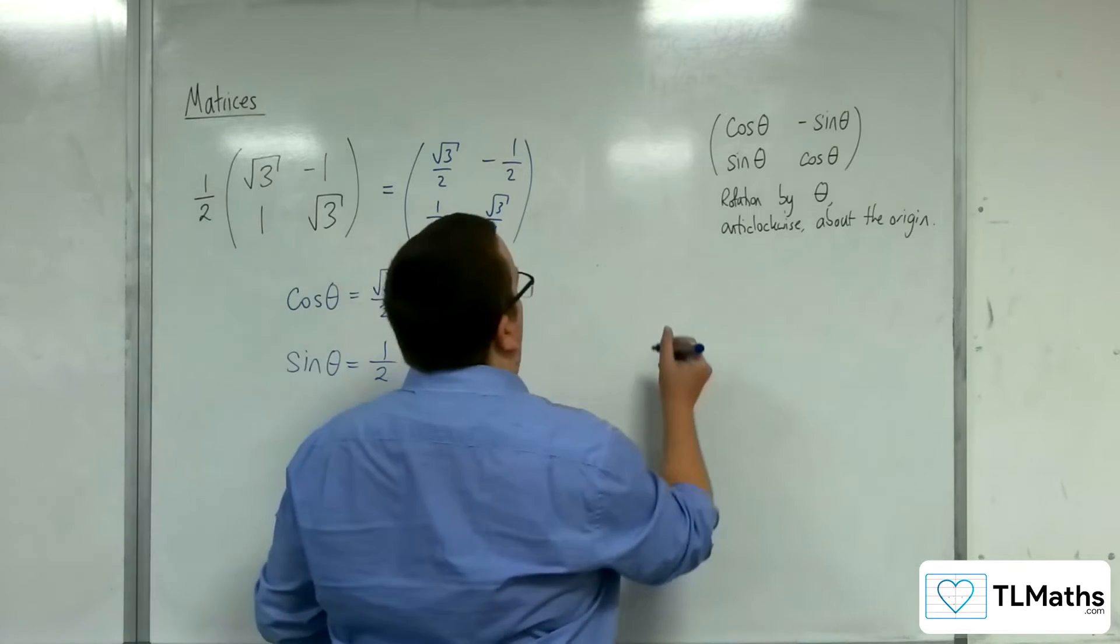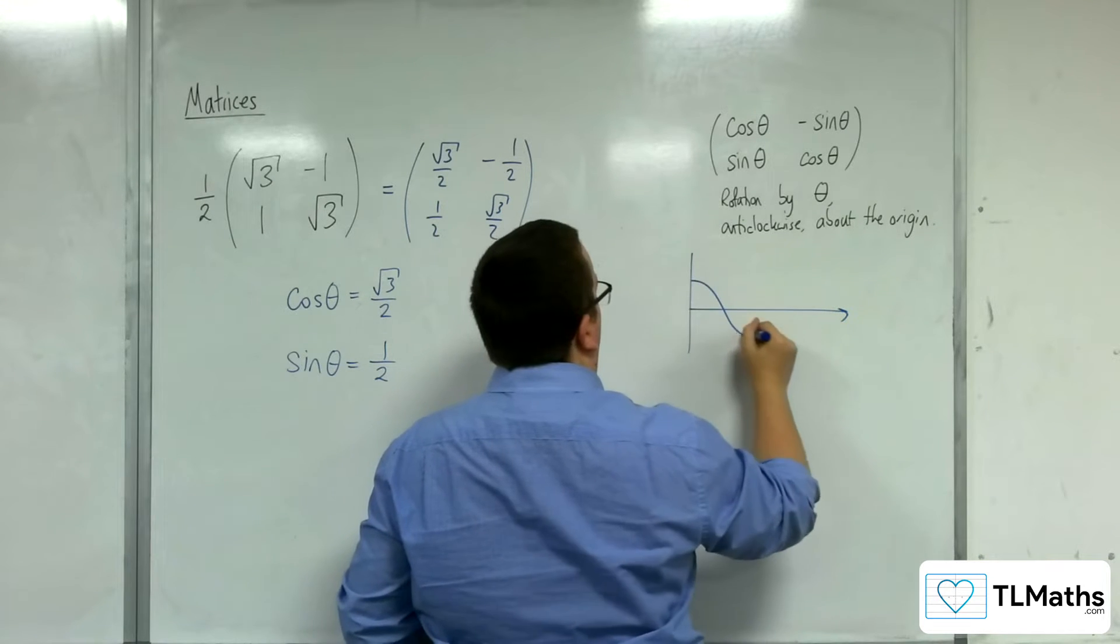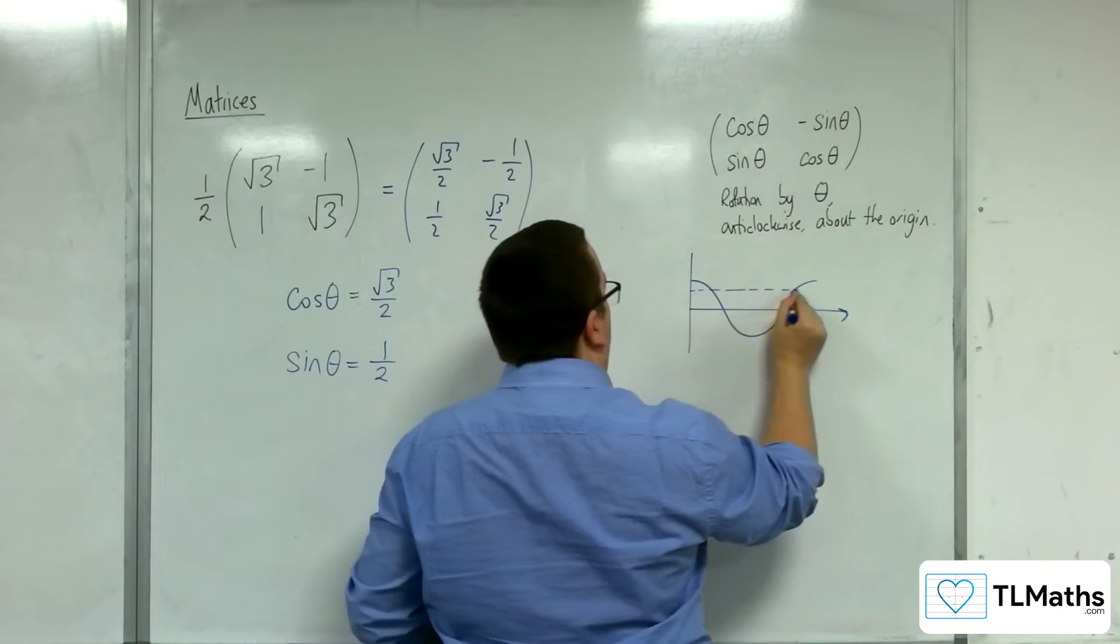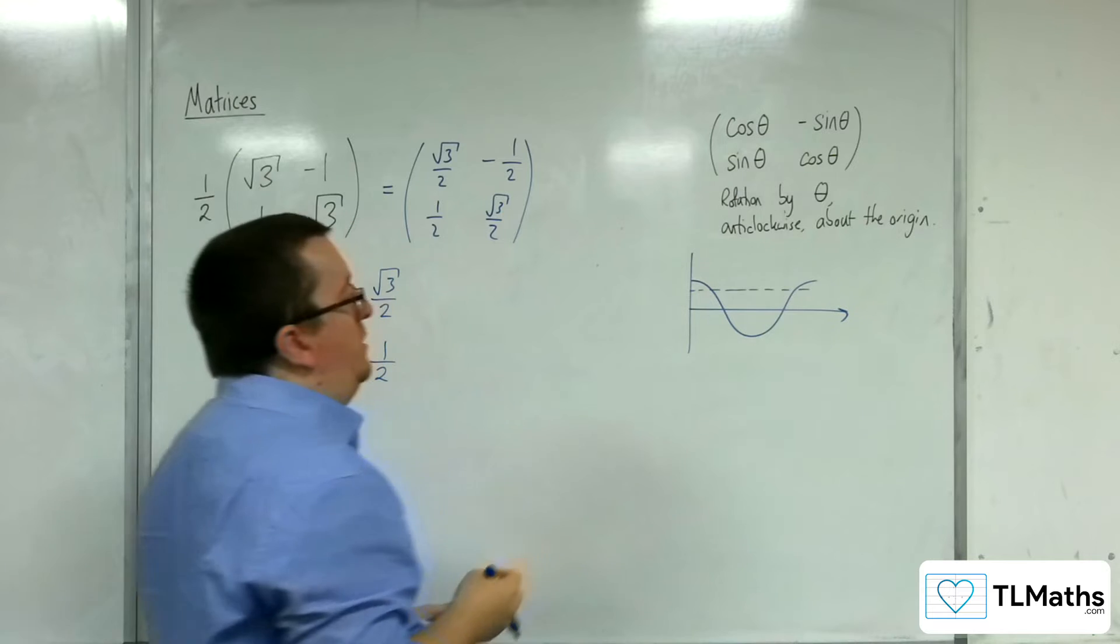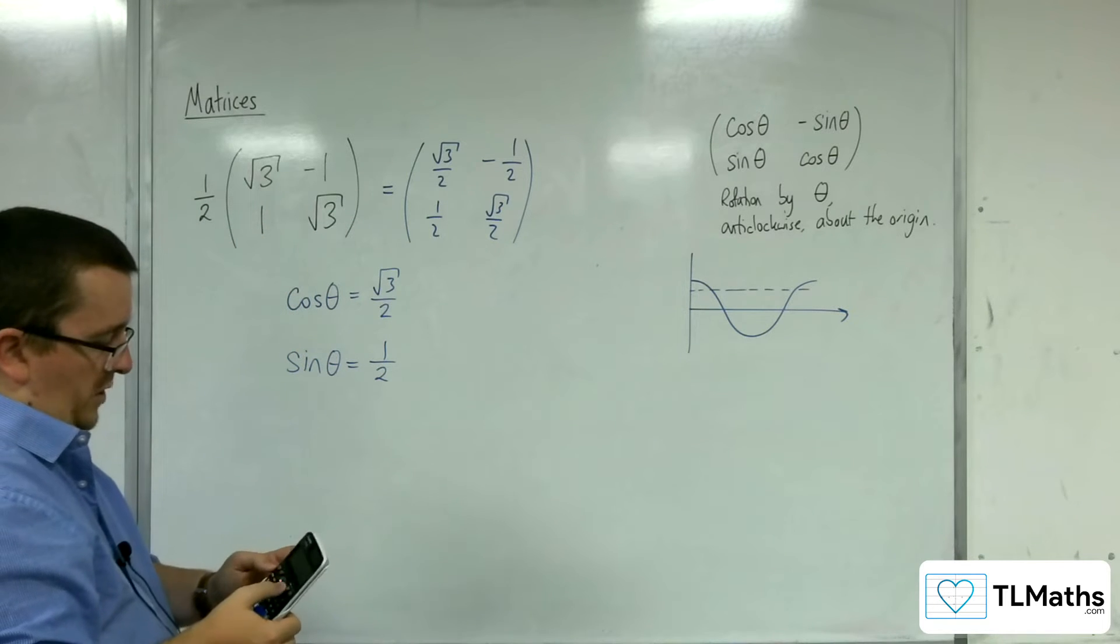Now, if we were to solve cosine theta equals root 3 over 2, then for root 3 over 2, we're getting potentially two different solutions. So, inverse cosine of root 3 over 2, in degrees, you get 30 degrees.